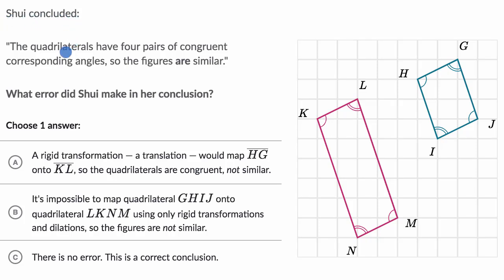We're told that Shui concluded the quadrilaterals, these two over here, have four pairs of congruent corresponding angles. We can see these right over there. And so based on that, she concludes that the figures are similar.